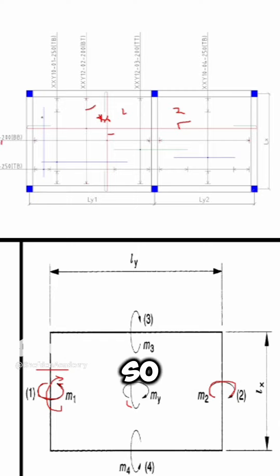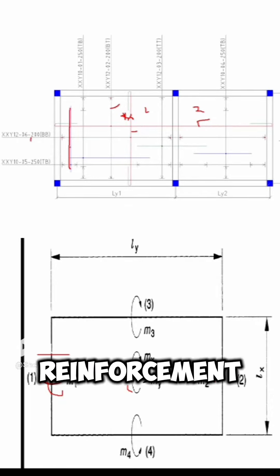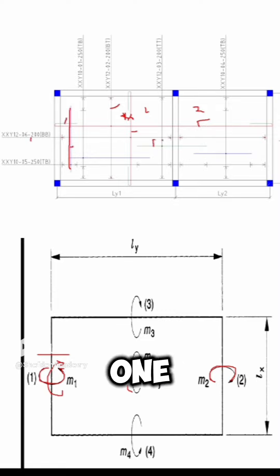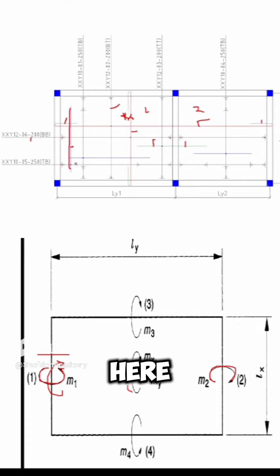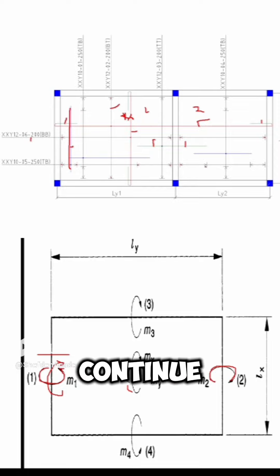For m1, this blue reinforcement is going to distribute the reinforcement at the top — it distributes this one, this one, and this one. If you look at the callout for the bar, you can see it spans from here to here, then continues from here to here, and again from here to here.